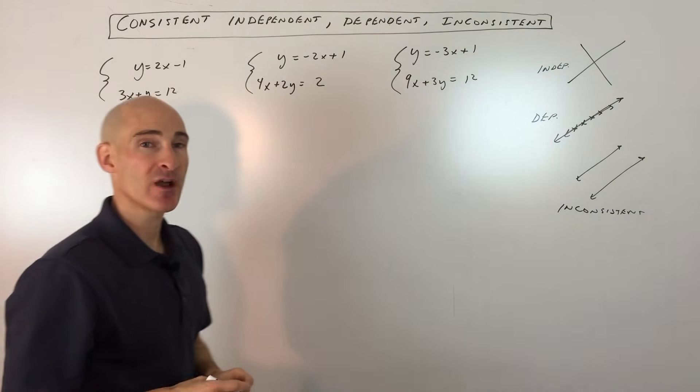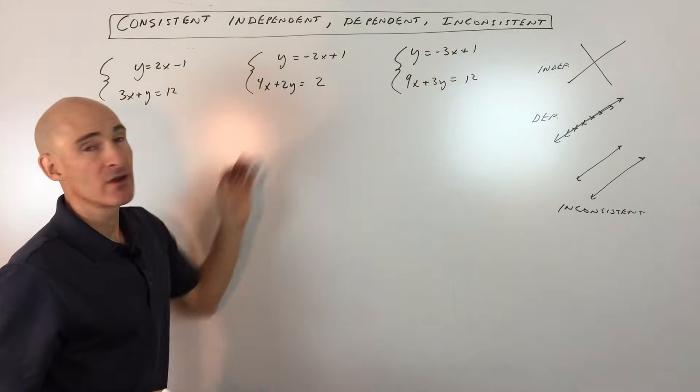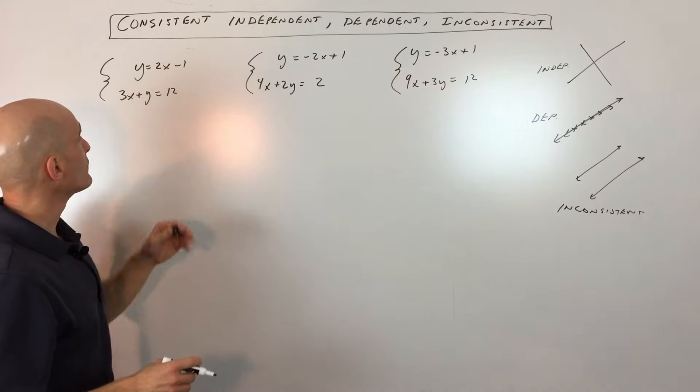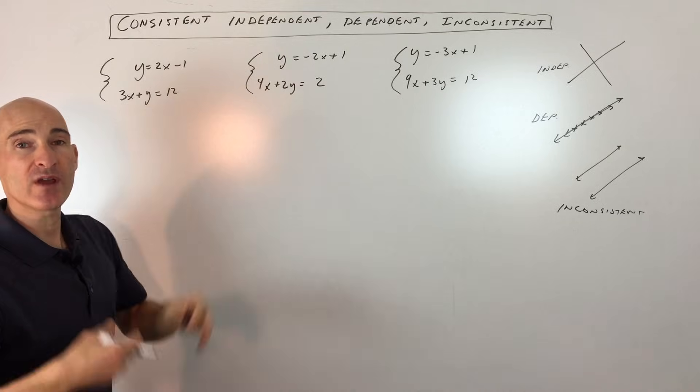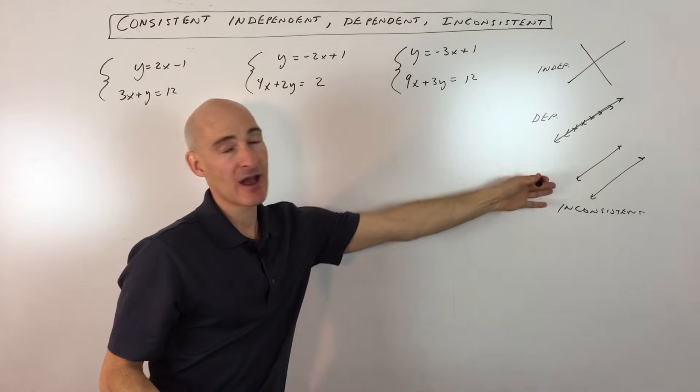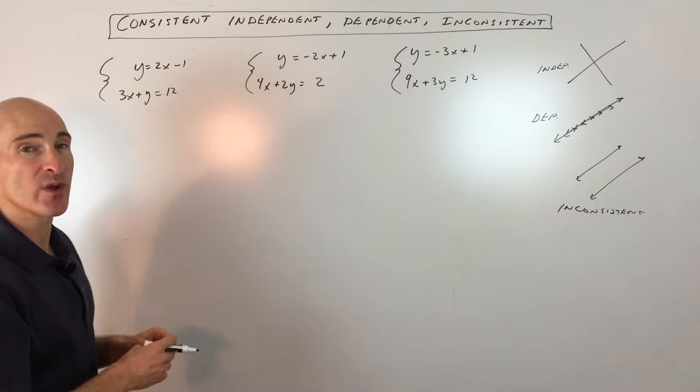Let's look at some examples. Let's see if we can talk about how to determine what type of a system that this is. So if we look at this first example here, one way to approach this is to rewrite the equations in the slope-intercept form of the line, so you can tell what the slope is, what the y-intercept is, and you get an idea about how many solutions they're going to have. I'm going to show you two different ways to do these problems.